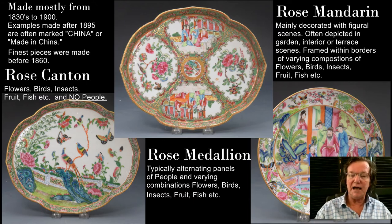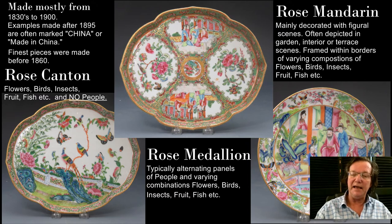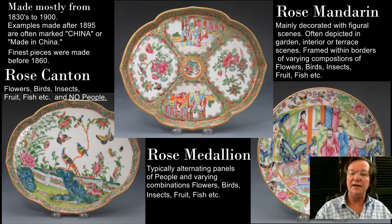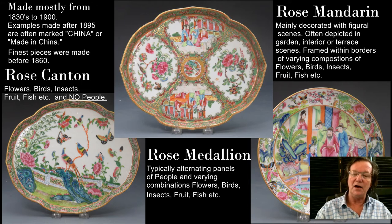Rose medallion is a mix. You have panels of people as well as panels of flowers, fish, insects, butterflies, fruit, and all that stuff, and all these people pieces tend to have a sort of an overall greenish tone to them — the dominant color to your eye is always that.